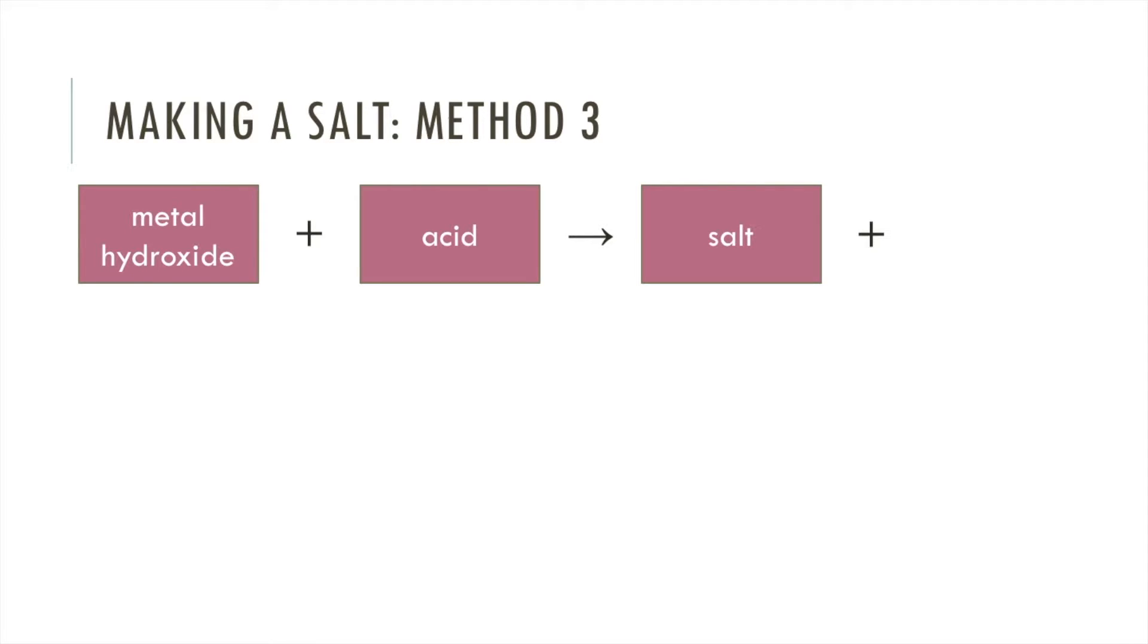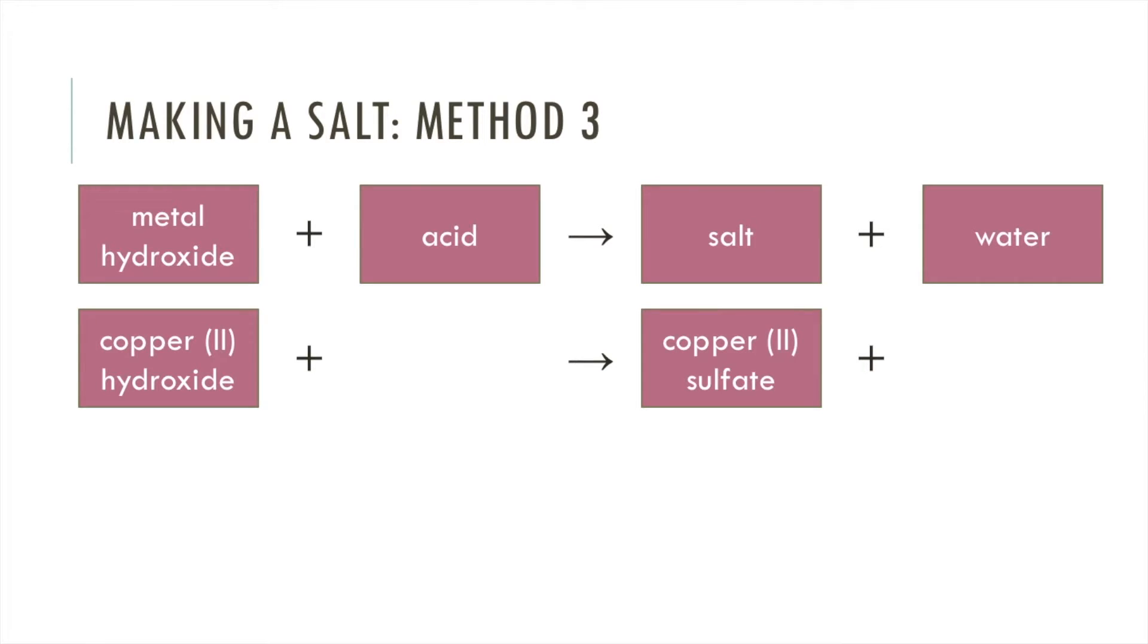A third method to make a salt is using a metal hydroxide. You again react this with an acid and you get a salt and water. Hopefully you can see a pattern here. If the salt we want to make is copper sulfate, then in this case the metal hydroxide we must have used is copper hydroxide. To get a sulfate, the acid used has to be sulfuric acid.